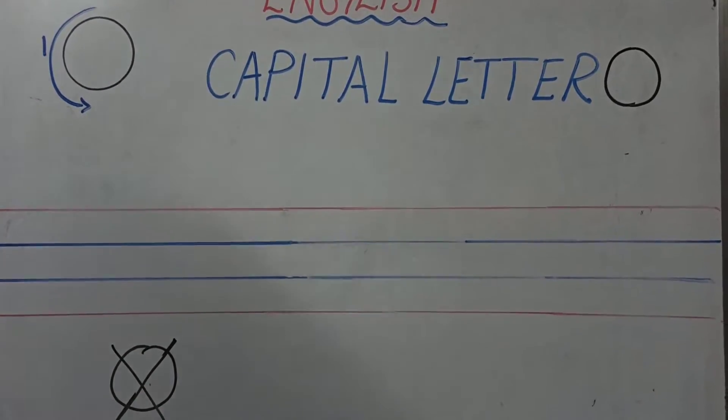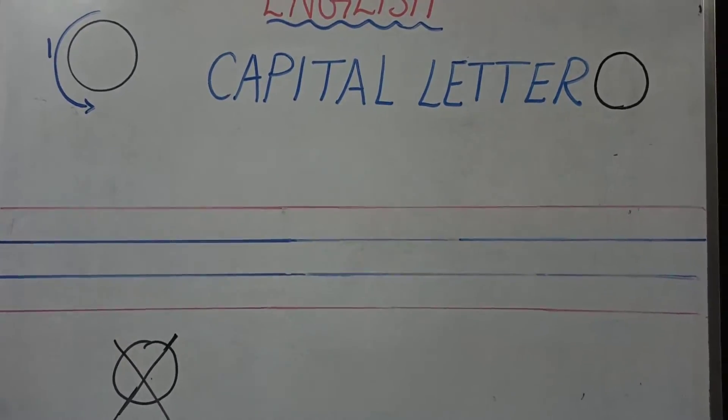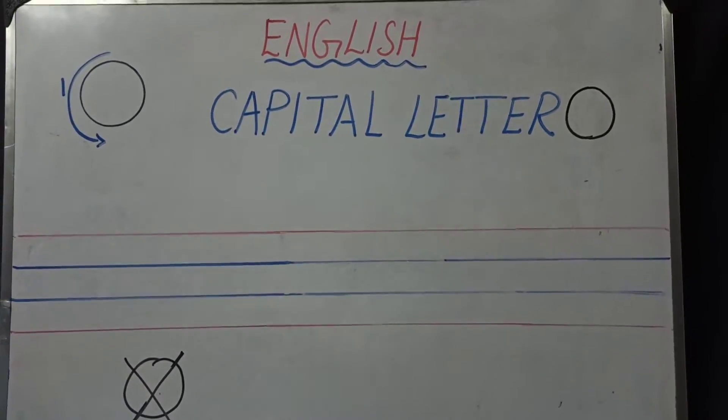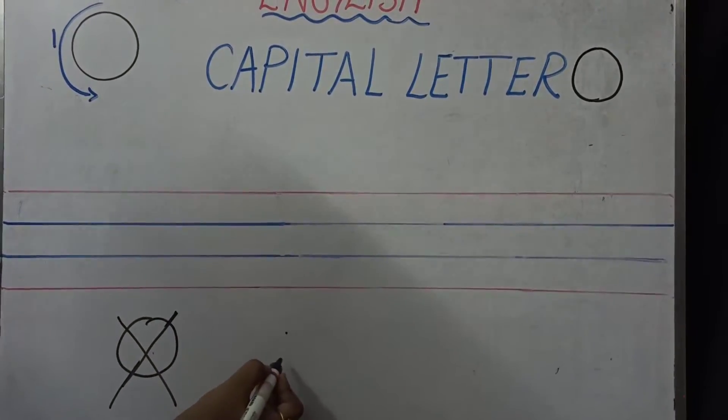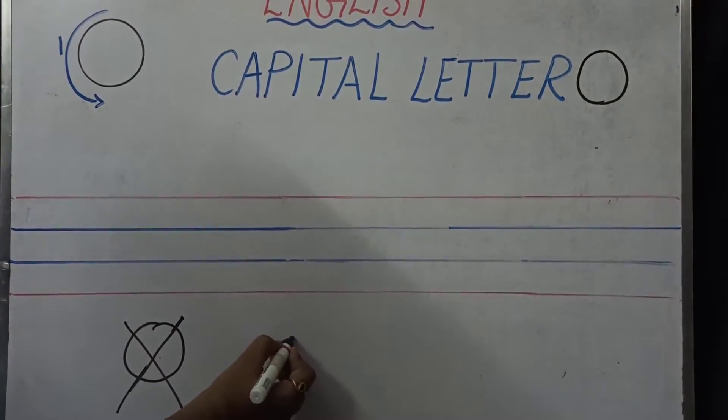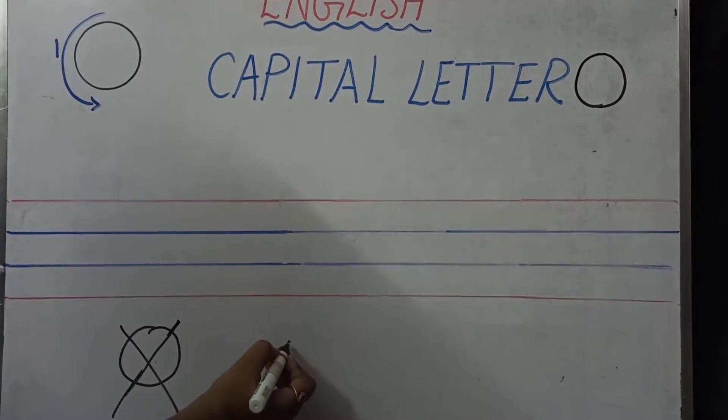If you are writing in this format, if you are going towards your right, then this is wrong. This is wrong. This should not be done. You are going to write the capital letter O towards your left. Now this is the starting point. Start from here and turn towards your left.